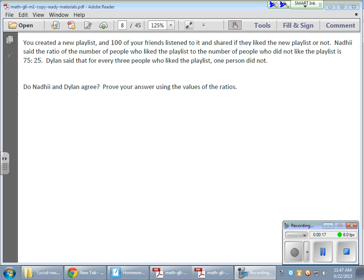So, for example, in this problem here, we have a new playlist, and 100 of your friends listened to it, and they shared if they either liked the new playlist or they did not like the new playlist. So, one student, Nodhi, said the ratio of the number of people who liked the playlist to the number of people who did not like the playlist is 75 to 25. Dylan said that for every three people who liked it, one person did not.